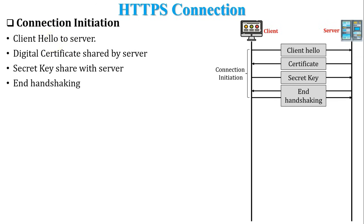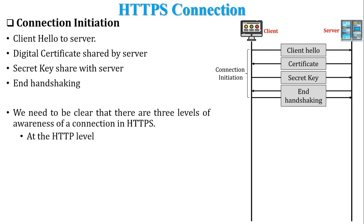There are three levels of connection in HTTPS. At the HTTP level, an HTTP client requests a connection to an HTTP server by sending a request to the next lowest layer, which is TCP, or possibly TLS/SSL — since TLS/SSL sits between the application layer and the transport layer. At the TLS level, a session is established between a TLS client and TLS server, and this session can support one or more connections at any time. At the TCP level, TLS requests to establish a connection begin with a TCP connection between the TCP entity on the client side and the TCP entity on the server side.